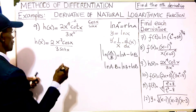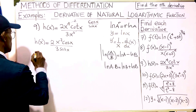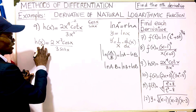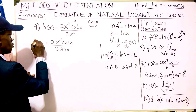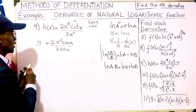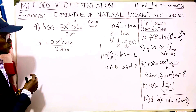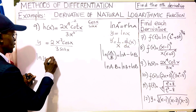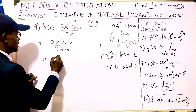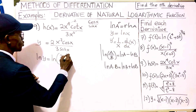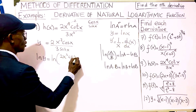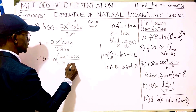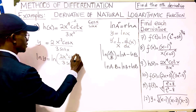Since we were asked to use implicit differentiation and the natural logarithm function to find its derivative, we replace h(x) with y and take the ln of both sides: ln(y) equals ln of 2x squared cos(x) over 3 sin(x).